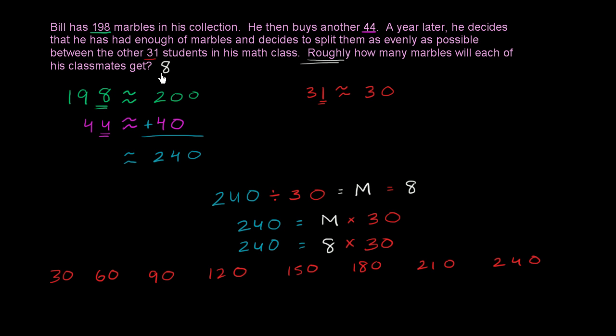Once again, this is an estimate, it's not an exact answer. Now you might have tried to get a slightly more precise answer. If you didn't want to round 198 and 44, you could have just added the two. 8 plus 4 is 12, and then 1 plus 9 plus 4 is 14, 1 plus 1 is 2. So the exact number of marbles he had was 242, which is pretty close to 240. So 240 was a good approximation.